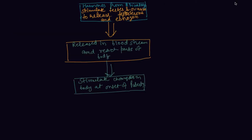This diagram shows that hormones from the pituitary stimulate the testes and ovaries to release testosterone in males and estrogen in females. These hormones are released into the bloodstream and reach the target sites in the body, stimulating changes in boys and girls at the onset of puberty. This is what is called secondary sexual characteristics.